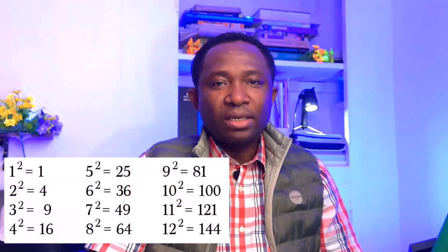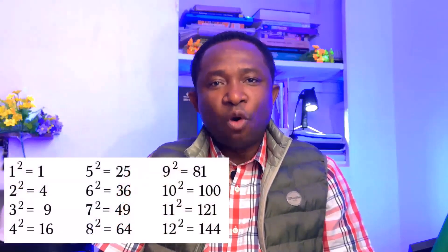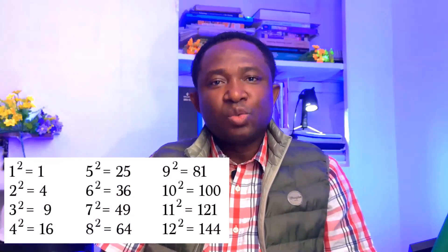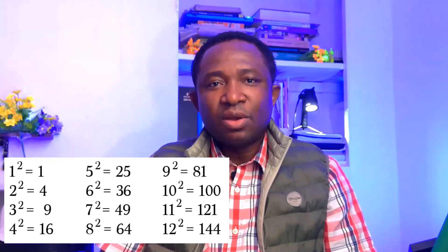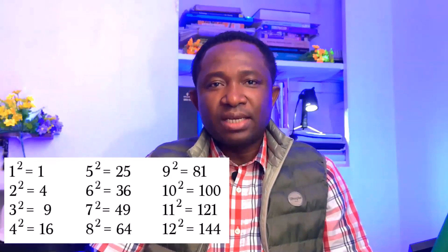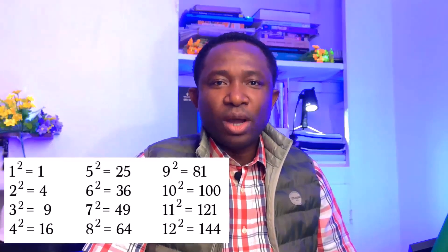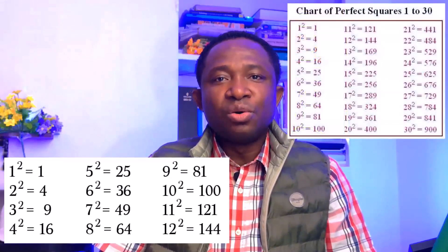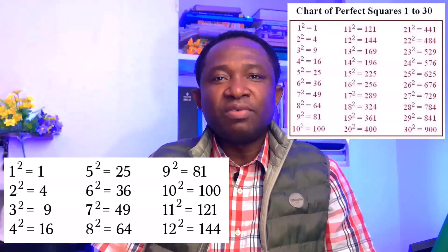Mathematically, this is when two perfect squares are separated by a minus. Perfect squares are 1, 4, 9, 16, 25, 36, 49, 64, 81, 100 and it goes on to positive infinity.